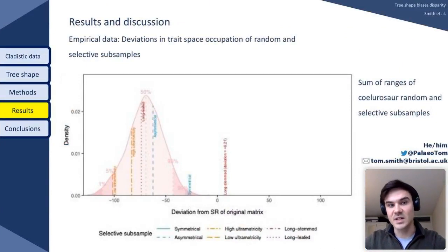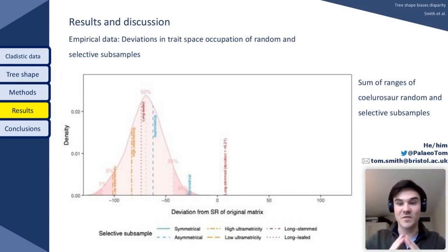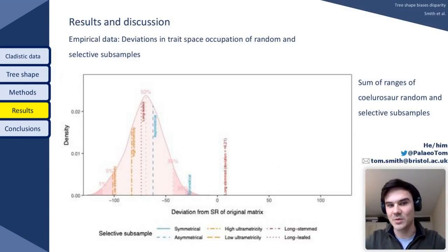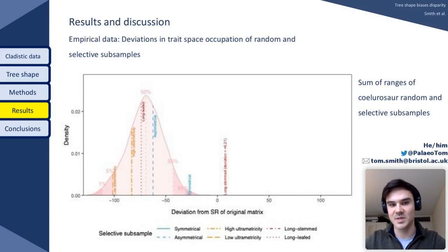Moving on to the empirical analysis, our aim was to compare random deviations in disparity under subsampling to deviations achieved through selective subsampling. We created a distribution of disparity deviations from 50% random subsamples — the Gaussian distribution shown here — and then compared that to the deviation in disparity observed when the dataset was selectively subsampled for specific aspects of tree shape. The number of random subsamples that either surpassed or fell below the selective subsample deviation was used to create a p-value. In this case, significant p-values were assigned to the symmetrical and the long-stem subsamples as they fell outside the random distribution.